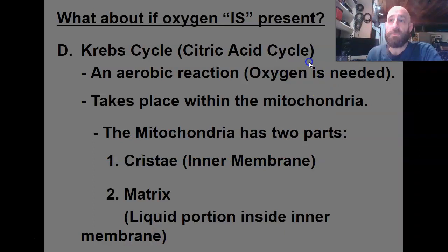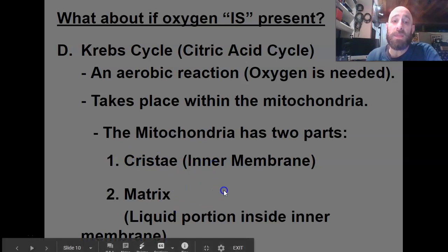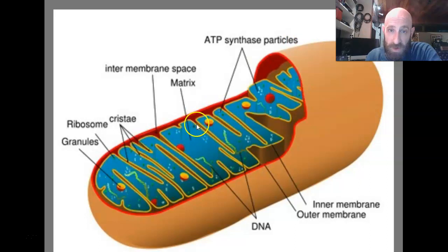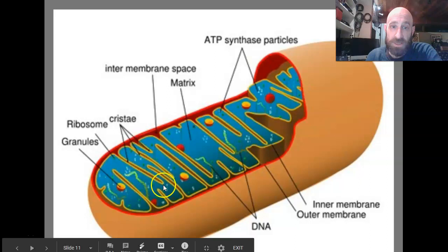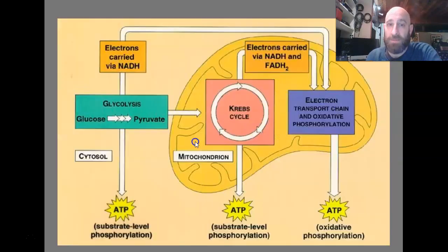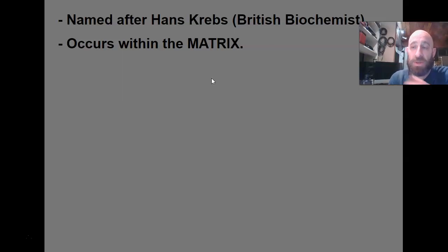The Krebs cycle is also known as the citric acid cycle, first discovered by Hans Krebs. It happens in the matrix of the mitochondria. The mitochondria has two membranes: an inner membrane called the cristae, an outer membrane, and a liquid center called the matrix. The Krebs cycle happens in the matrix — that fluid portion in the middle.